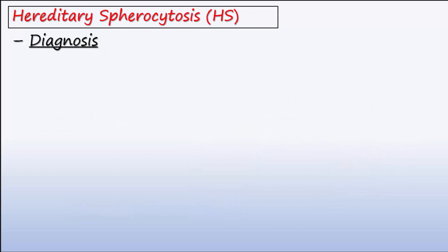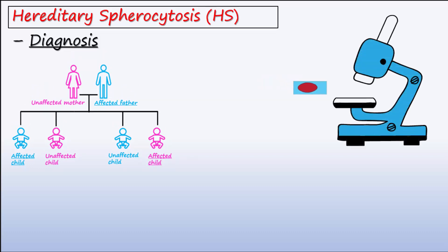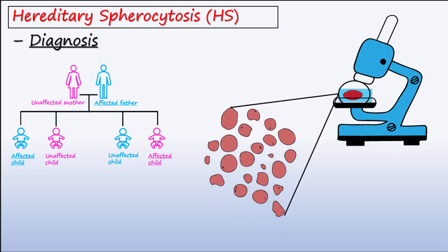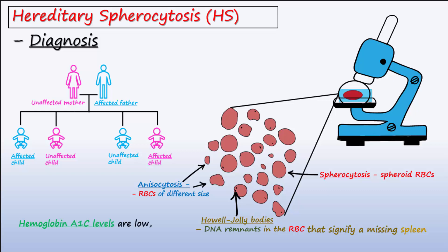In the diagnosis of HS, it is important to check family history since HS is an inherited condition. Observing a peripheral smear under a microscope is another important part of HS diagnosis. Those with HS typically show anisocytosis, spherocytosis, and Howell-Jolly bodies in the blood smear. Anisocytosis is a term used to describe the unequal sizes of the red blood cells. Howell-Jolly bodies are clusters of DNA remnants in the erythrocytes, which are usually removed in the spleen. When these bodies are present, it indicates a damaged or missing spleen. Patients with HS also show decreased hemoglobin A1C levels. This test determines how much glucose is attached to the hemoglobin of the red blood cells, normally used to evaluate glucose control in diabetic patients. The hemoglobin A1C levels are low in HS because of the reduced RBC lifespan.